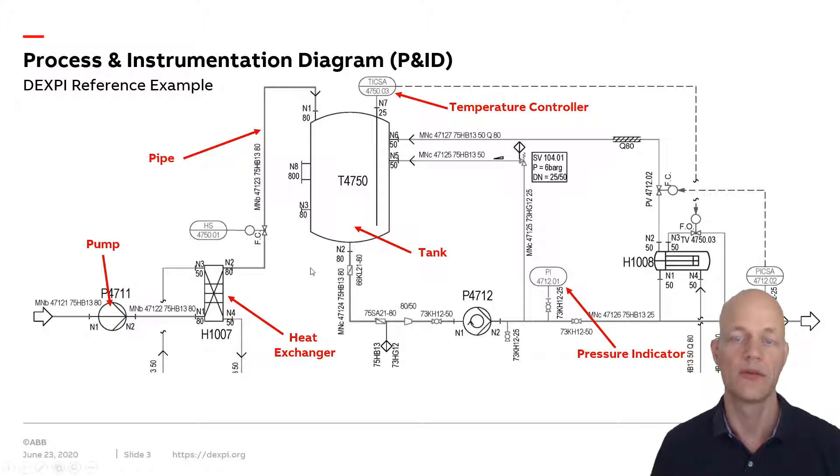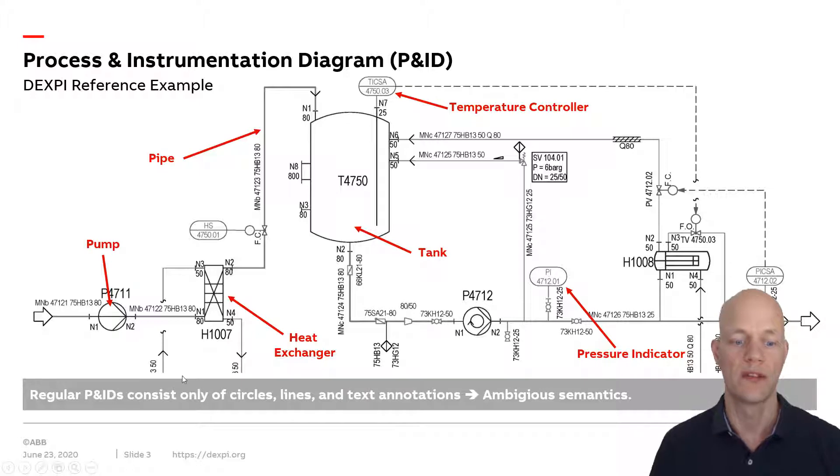The problem with these drawings is they consist only of circles, lines, and text annotations. The semantic information that they represent certain industrial equipment types is usually lost because the shapes are not fully standardized among different CAD tools. So it's very difficult to process these diagrams with algorithms.